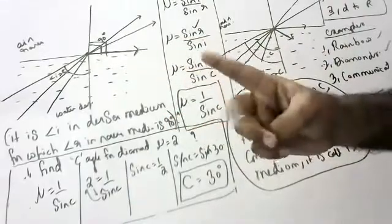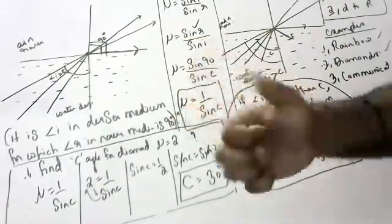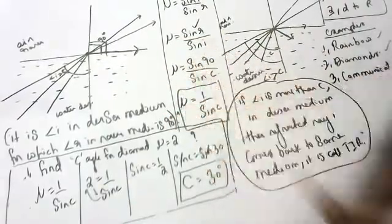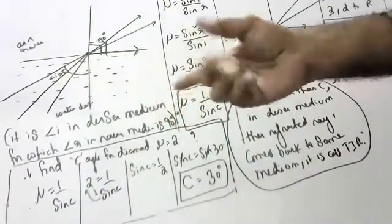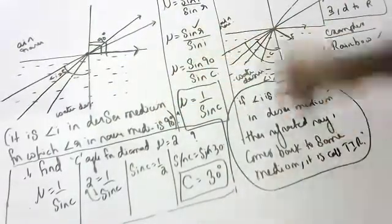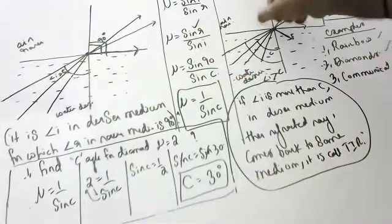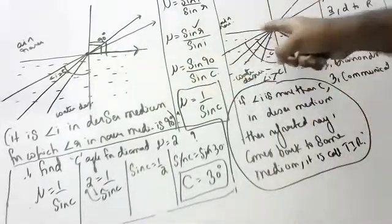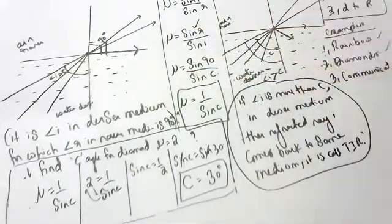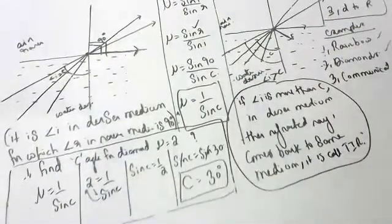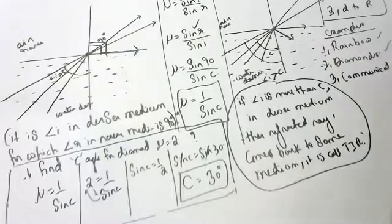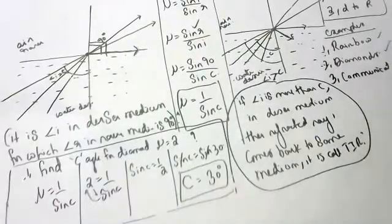Total internal reflection is why rainbows form. If the angle of incidence is more than the critical angle, the ray comes back into the same medium. I hope you all understood. Please go through the notes in the description. Thank you so much.